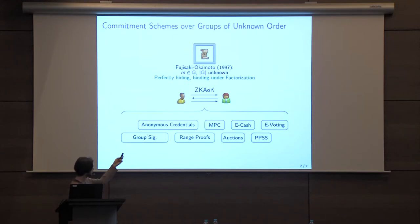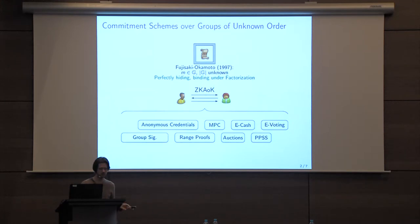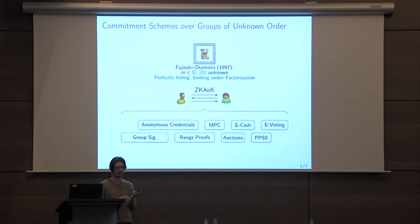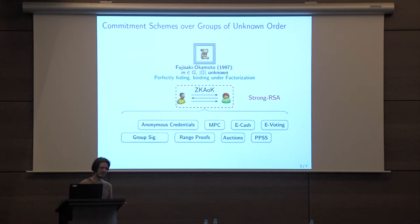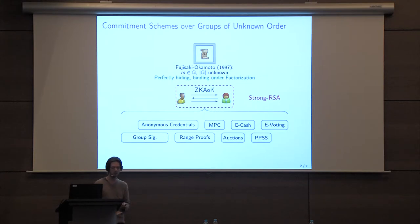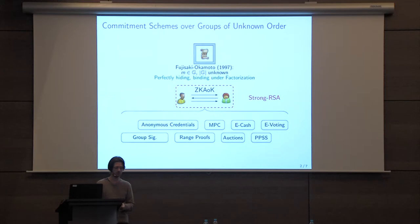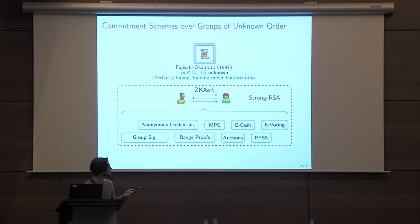This is a basis for a large number of applications. But the issue is that while the Fujisaki-Okamoto commitment scheme has nice properties — it's perfectly hiding and binding under the factorization assumption — the security of the zero-knowledge argument of knowledge of an opening is a bit less understood. It was proven to hold under an assumption called the strong RSA assumption, which is a less standard assumption than, say, the RSA assumption, and in some sense less desirable.